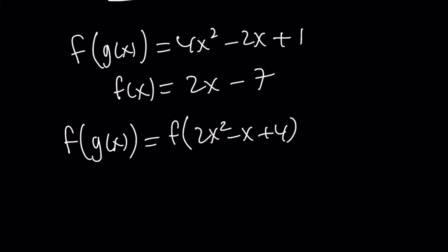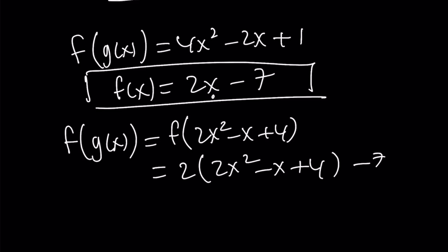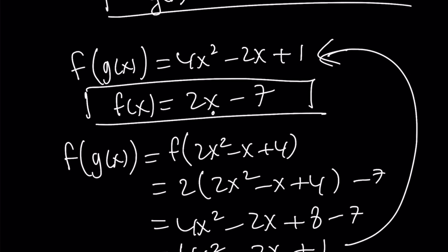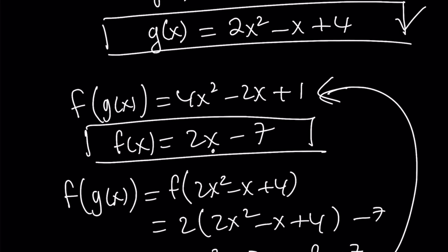Now, what is f of 2x squared minus x plus 4? Well, by definition, f of x will take the x and multiply by 2. So we're going to multiply this expression by 2 and subtract 7 from it. And that's going to give us 4x squared minus 2x plus 8 minus 7, which is equal to 4x squared minus 2x plus 1. And as you know, that is the same thing as f of g of x. So our solution checks. And this brings us to the end of this video.